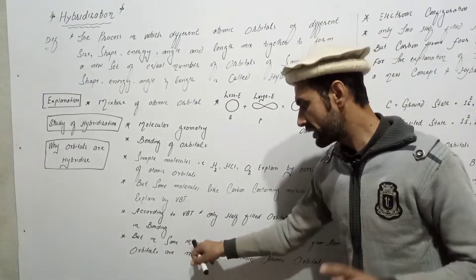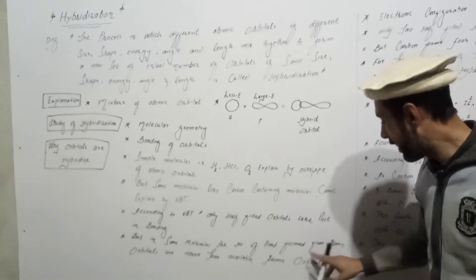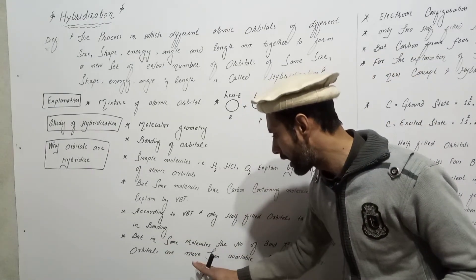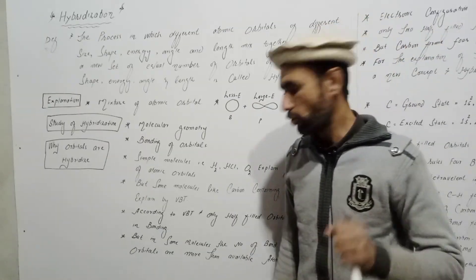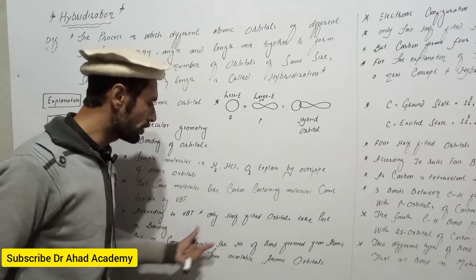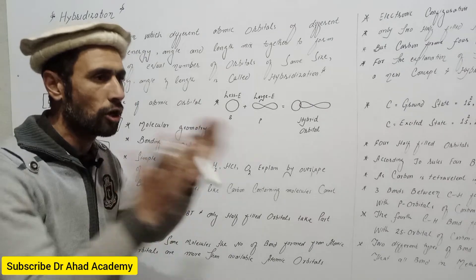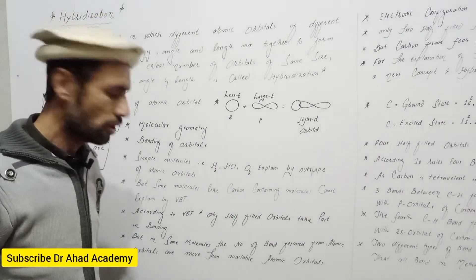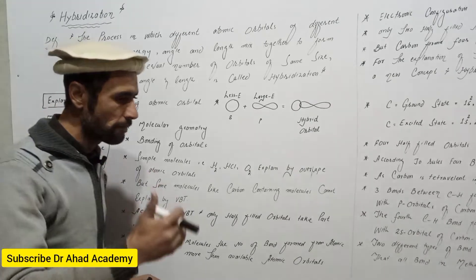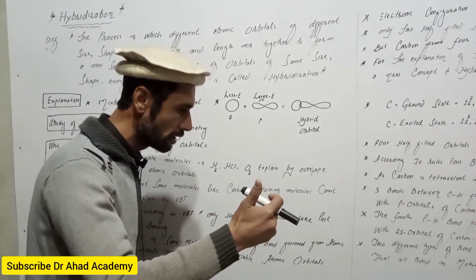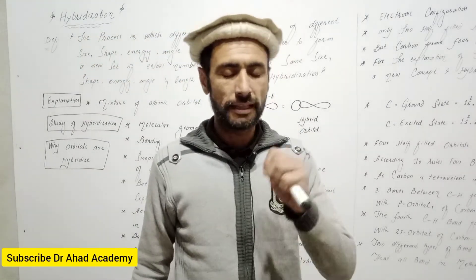But in some molecules, the number of bonds formed from atomic orbitals is more than what can be explained by available half-filled orbitals alone.